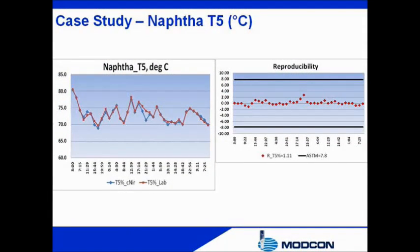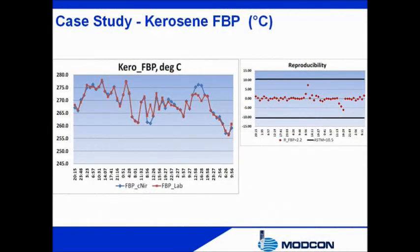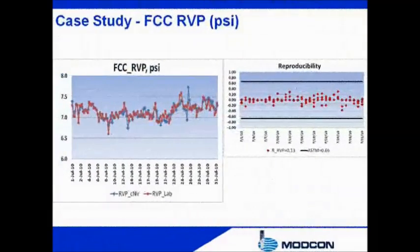Case studies compare the correlation between NIR predicted quantified physical properties and laboratory analysis across various physical properties and process streams. All analytical results demonstrate high reliability, accuracy, and reproducibility between NIR and laboratory measurements. The 5% distillation temperature of naphtha as a function of time shows an excellent correlation between NIR measurements and laboratory results. Similarly, the final boiling point (FBP) of kerosene shows an excellent overlap of laboratory results with NIR determined values. A further application is the RVP of the FCC process stream, with deviation between laboratory and NIR results within the acceptable range.